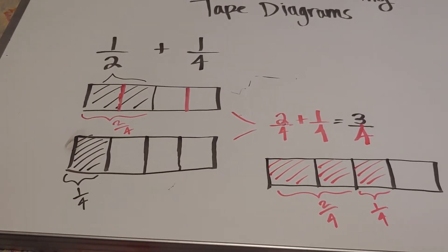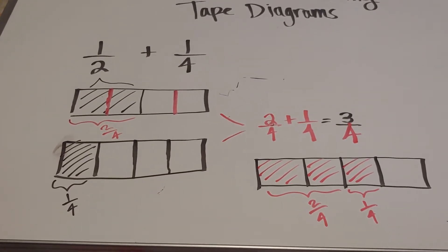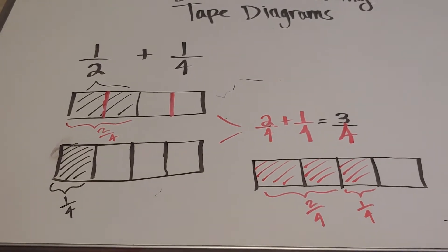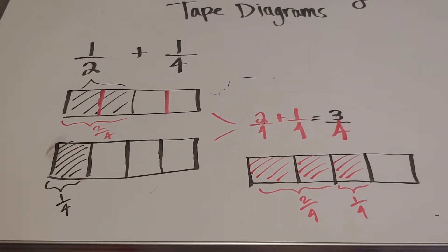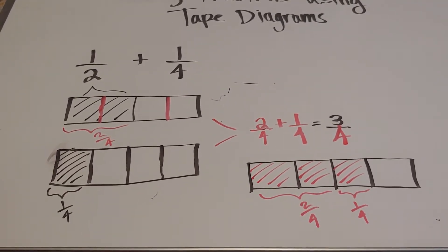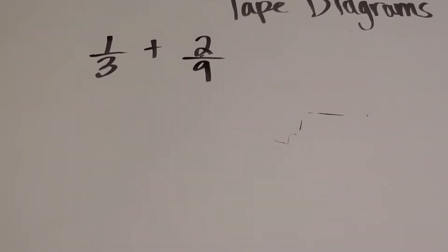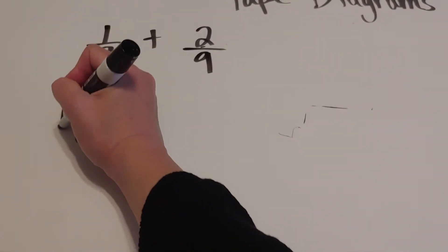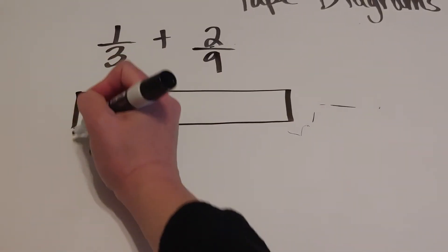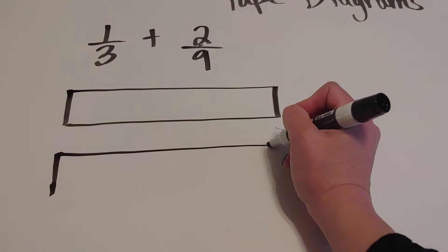I'm going to do one more example. So again, I'm going to do one more example so you guys can see it from start to finish. We're going to try one-third plus two-ninths. I'm going to draw two tape diagrams stacked up and down — I think this is a little bit easier to match them together.